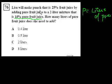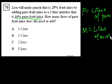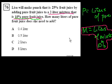And let's say adding to a 2-liter mixture. So let's say M equals the liters of mixture, liters of the mixture. That is 10% fruit juice, right? So that is this right here. To a 2-liter mixture that is 10% fruit juice, we're calling that M. That is the 2-liter mixture that is 10% fruit juice. How many liters of pure fruit juice does she need to add? So let's think about it a little bit.